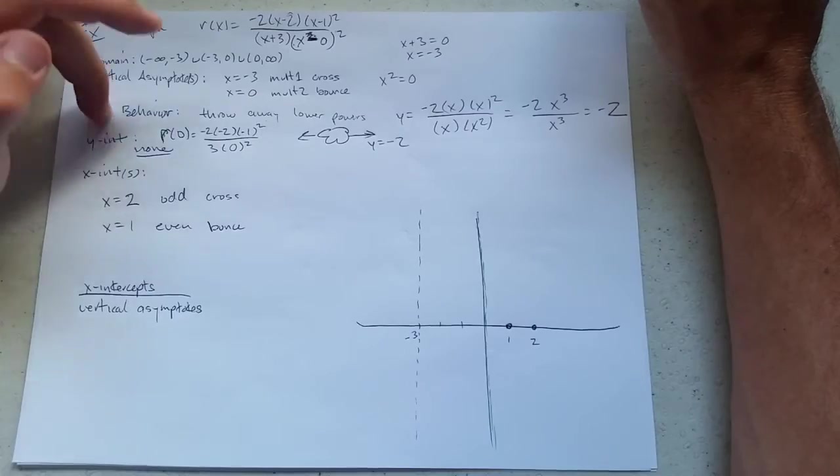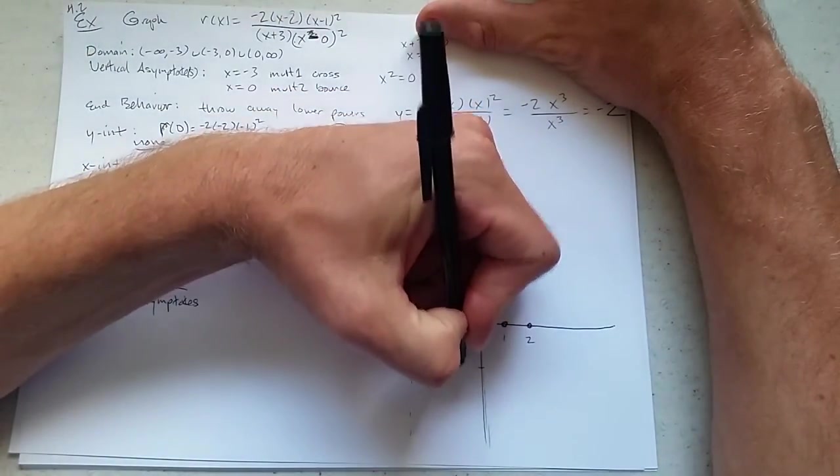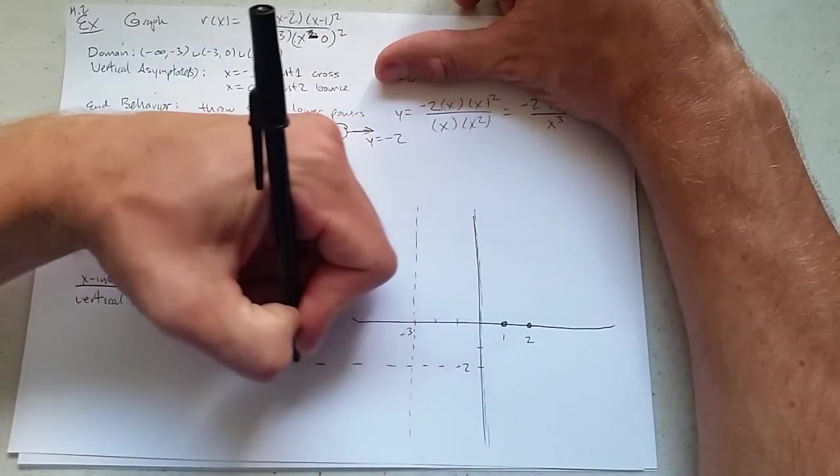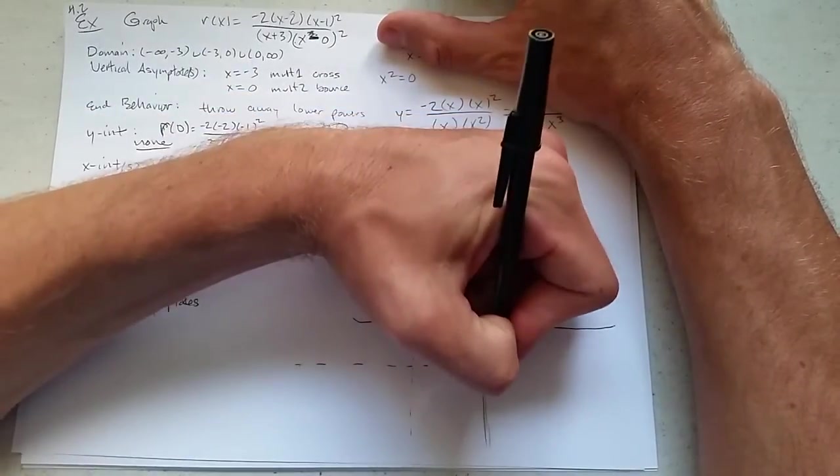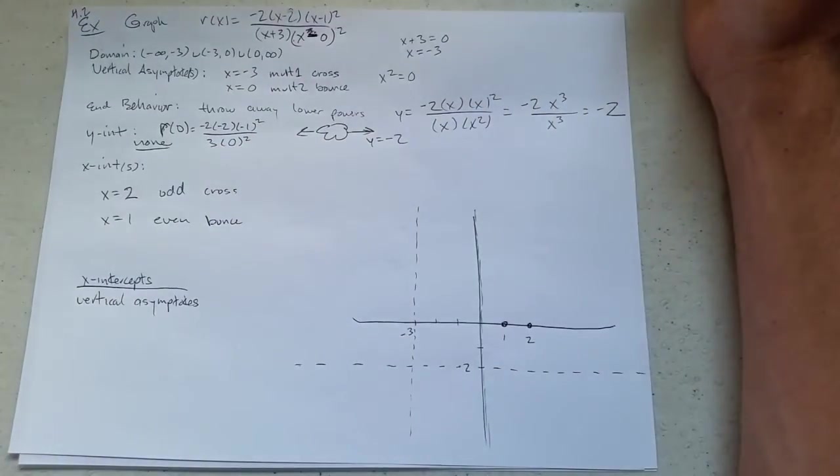Now our end behavior, y equals negative 2. There's negative 2. And we're going to draw this out. Same thing, you would dashed line. I don't want to confuse this with the other axis, the x-axis. So there's our dashed line.